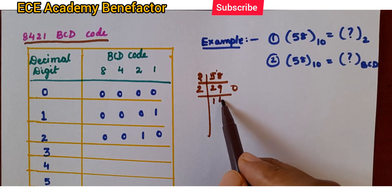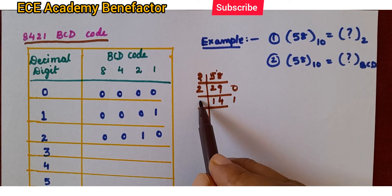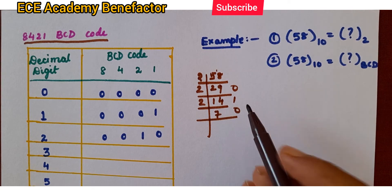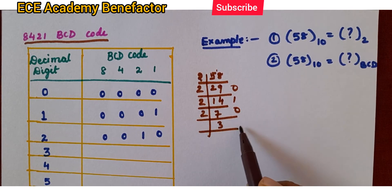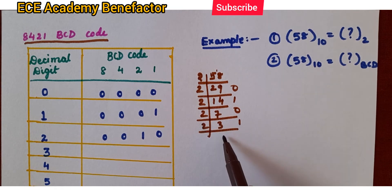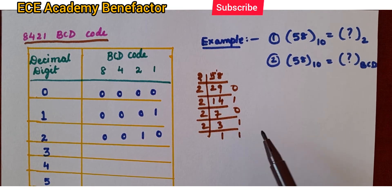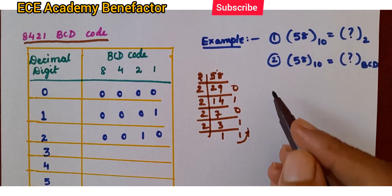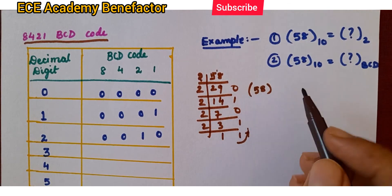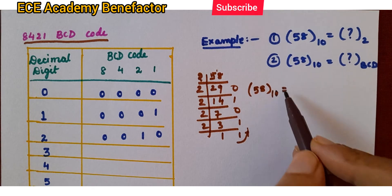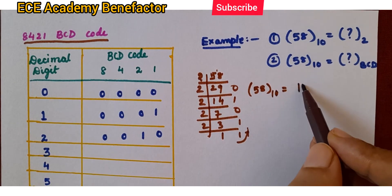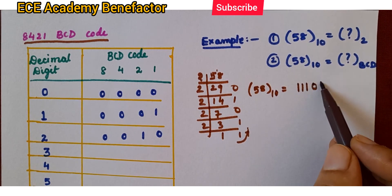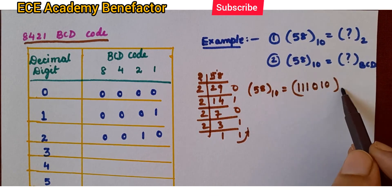Dividing step by step: remainder is 1, then remainder is 0, then remainder is 1, then remainder is 1. You have to write these numbers from bottom to top. So, 58 decimal in binary is 111010. This is in binary.